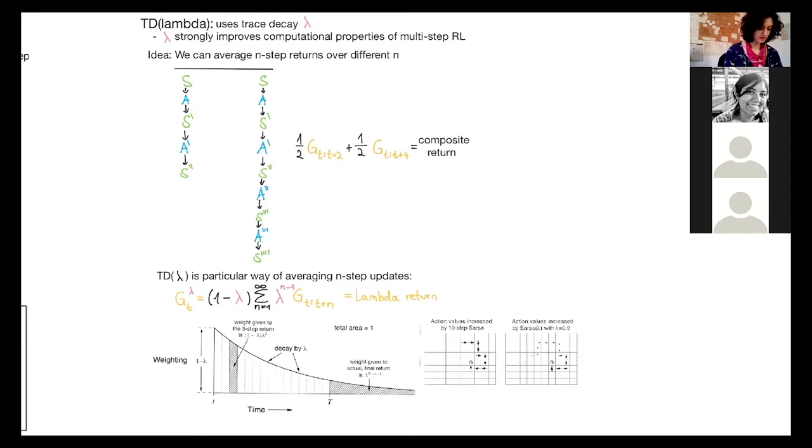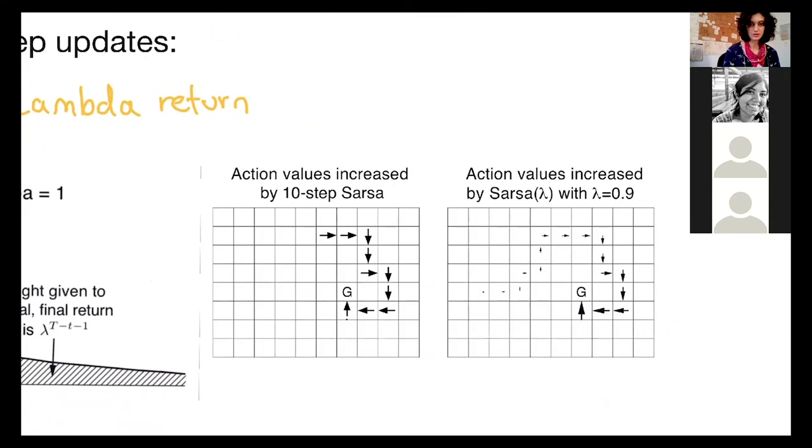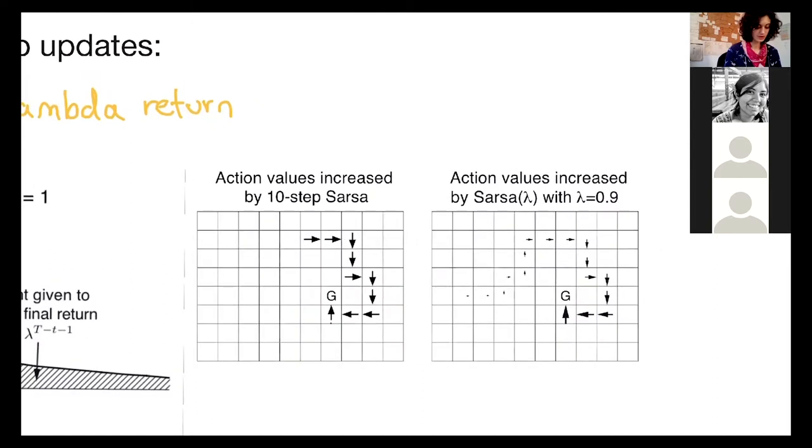And if we compare it here to this grid world example that I showed earlier, between the 10-step SARSA and SARSA with lambda return, we see that now there is a decay over time. So more recent states are weighted stronger than past states.